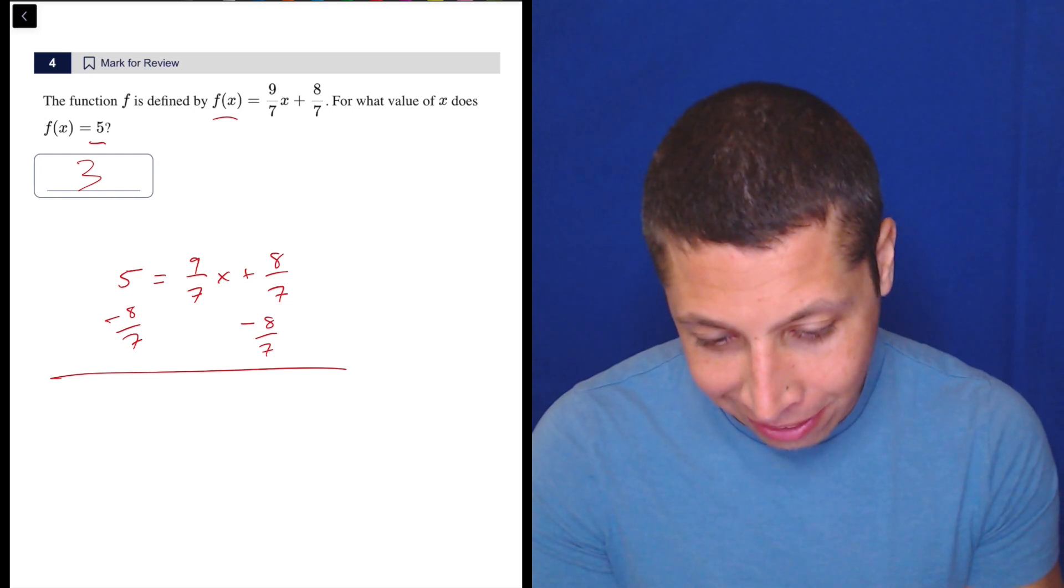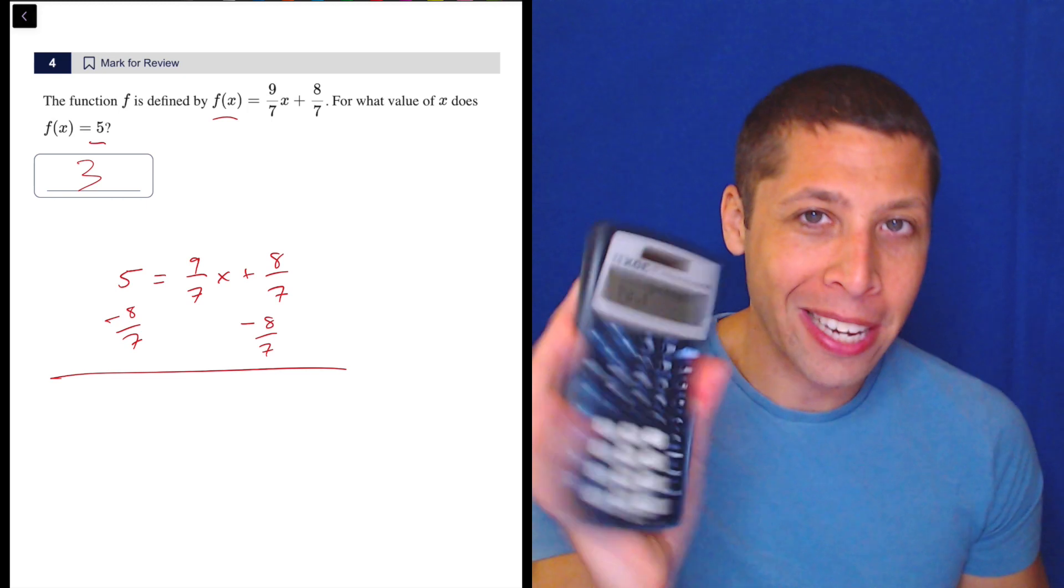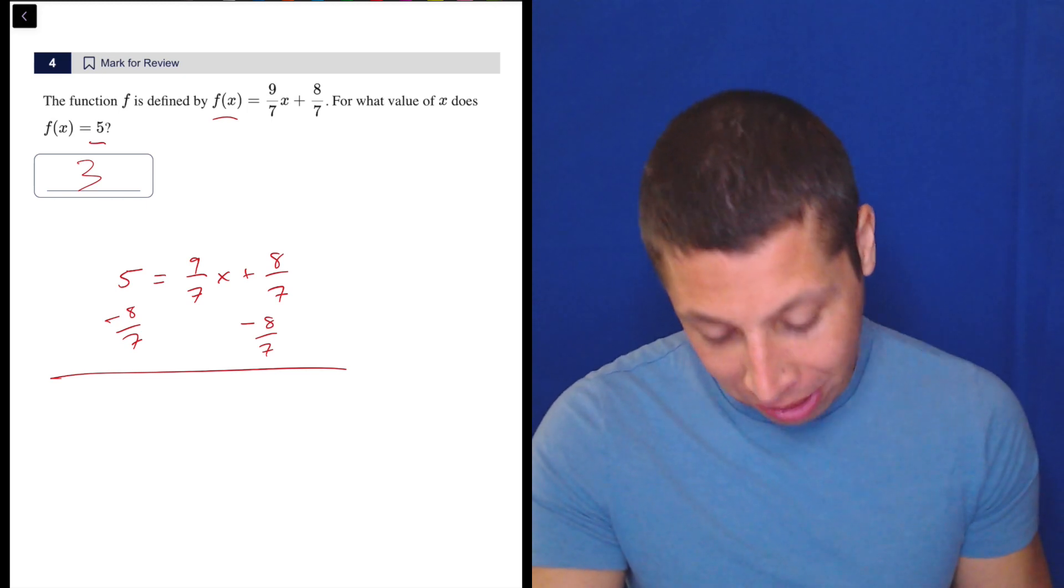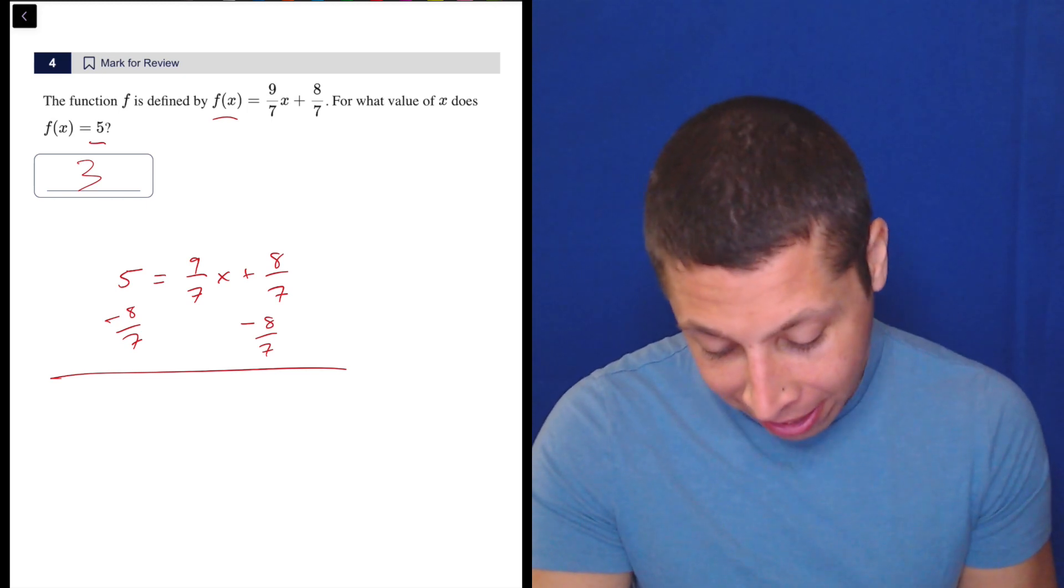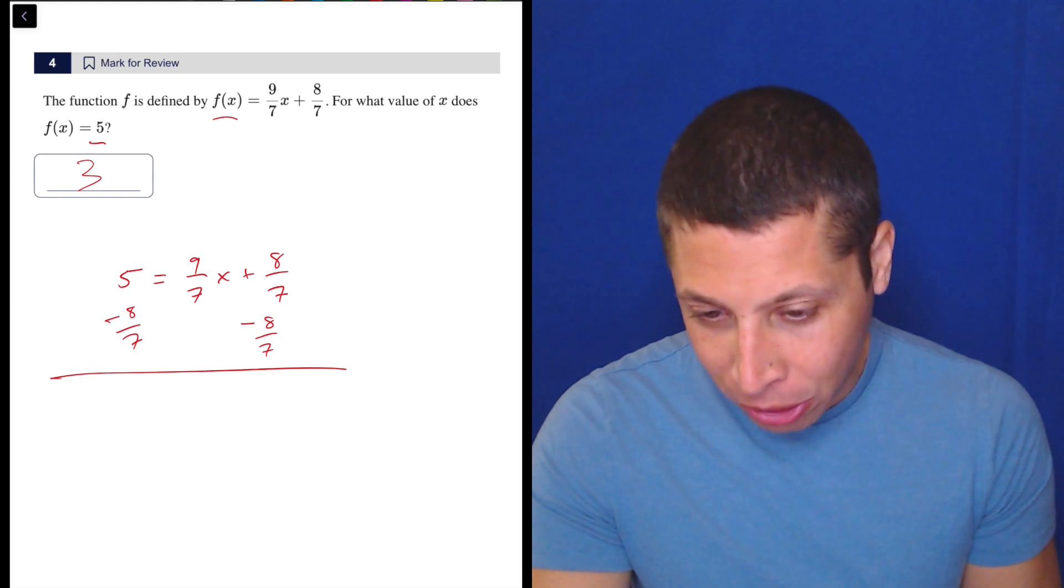So a fraction. And of course, this stupid calculator gives it to me as a mixed number. So it's 3 and 6/7. Oh my god. Yeah, this is not worth your time.